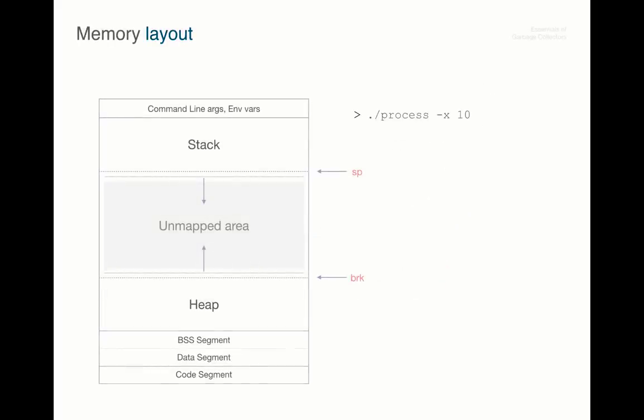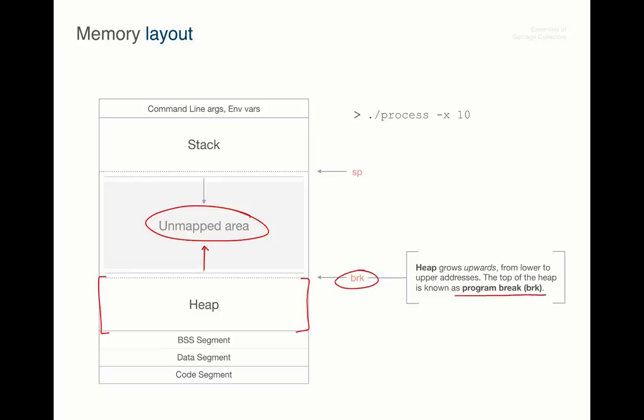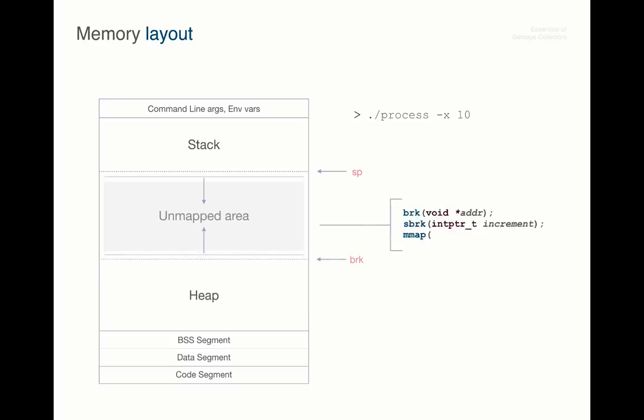From the previous lecture about the memory layout, we remember that to allocate memory from an operating system means to map more memory for this process. So the heap is located in this region and, as we see, grows upwards towards the higher addresses, and the area in between the stack and the heap is known as the unmapped area. Mapping is controlled by the position of the program brake, and to control the position of the brake pointer here we can use several system calls.